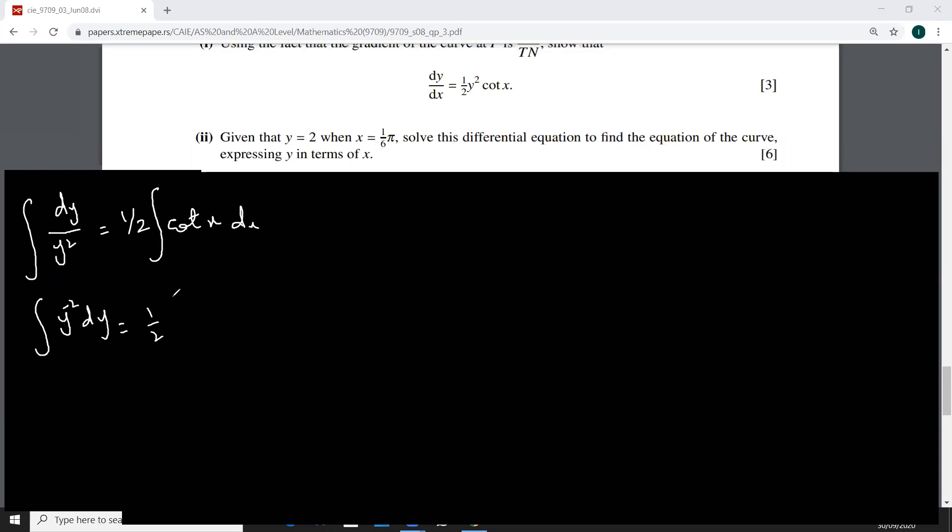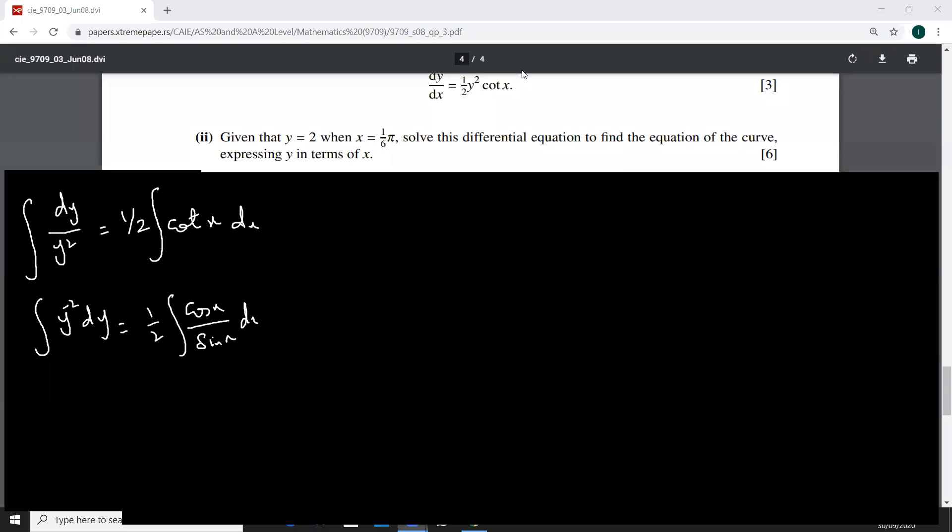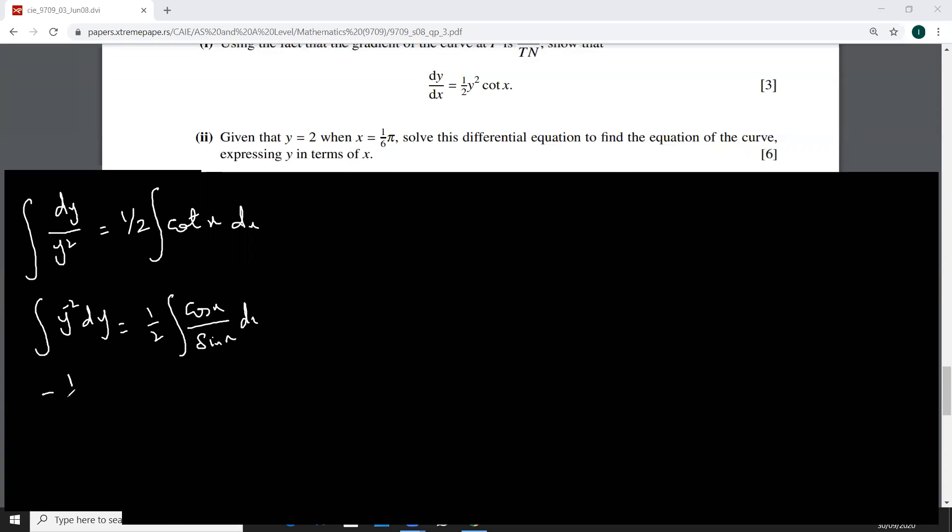How can I integrate this cot x? Exactly, ln sine, because you will write it as cos x over sine x. So this will give me minus one over y, and we know that sine x derivative is cos x, so this can simply be written as half ln sine x, and then you have plus c.